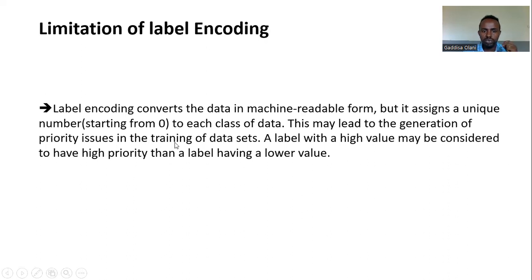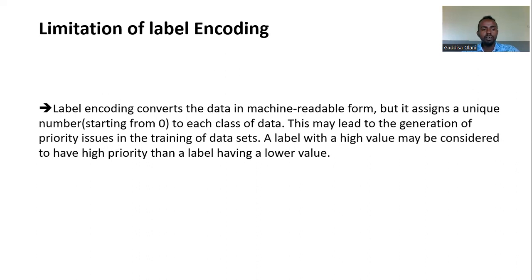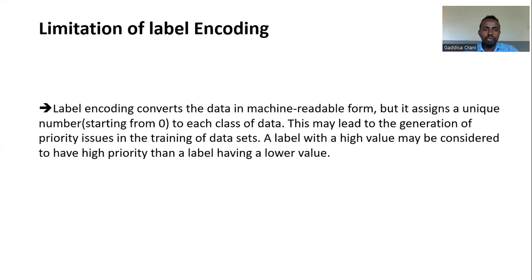This will lead to the generation of priority issues in the training of the dataset. We have a training scenario, and then we have a neural network, and then we have zero in comparison during the model update process, and then we have a priority set. We have a binary classification and a gray load, with a need for the category.